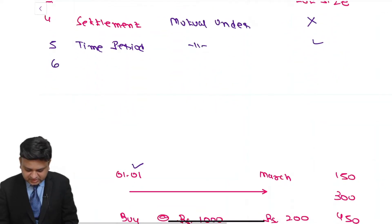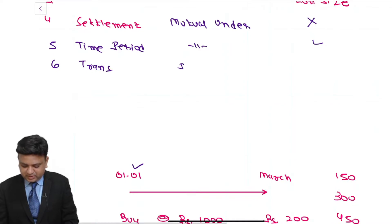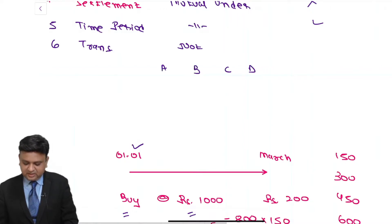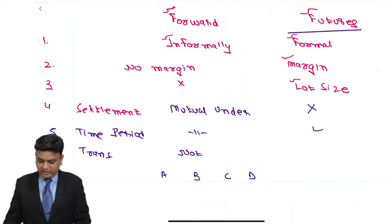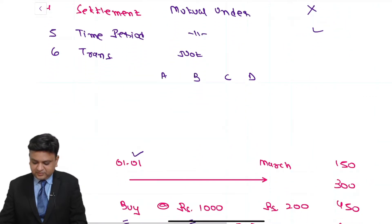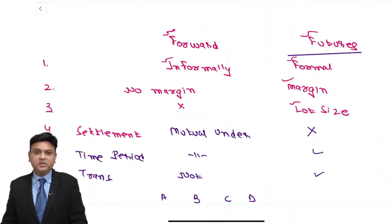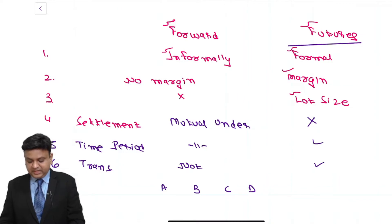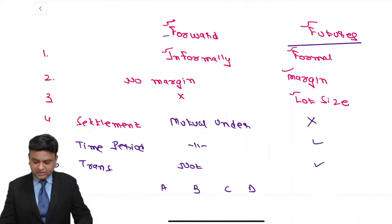The sixth difference is transparency. As far as the forward contract is concerned, it is not transparent. If I am entering into a forward contract with Mr. A, Mr. B, Mr. C, Mr. D, nobody is aware of the price at which the transaction is entered upon. As far as the futures contract is concerned, there is transparency because it is entered through an online terminal — what the futures price is, anybody can come to know, even if you are not a party to the contract. These are the major differences between forward contract and futures contract; otherwise, in terms of the basic transaction there is no difference.